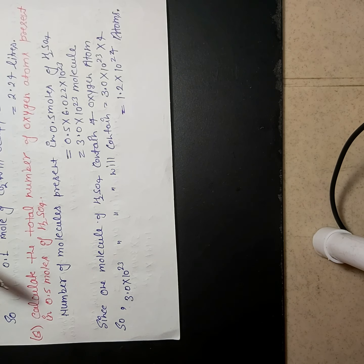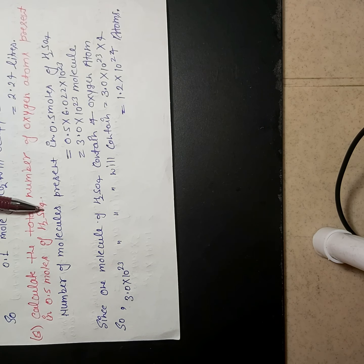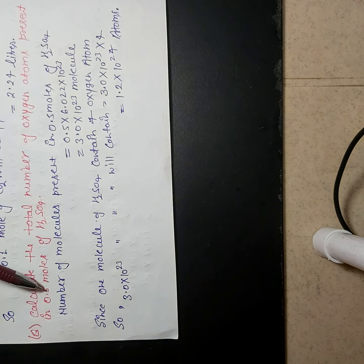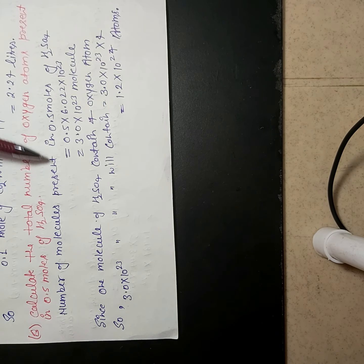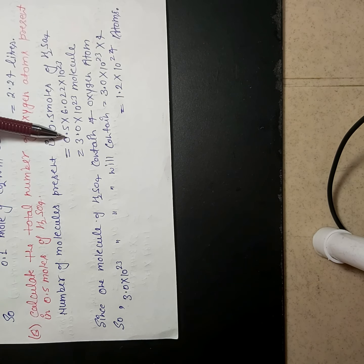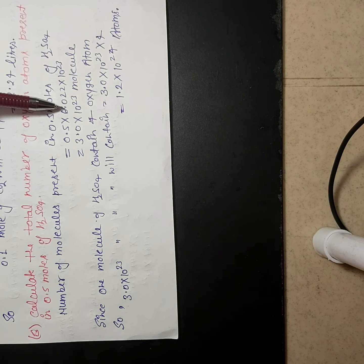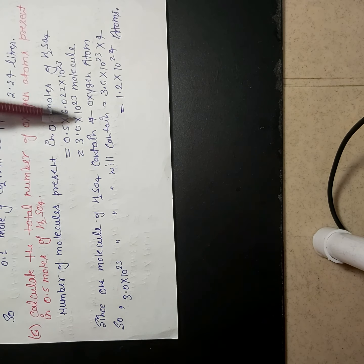As we all know that 1 mole of any compound contains 6.022 × 10²³ molecules. Then half mole of H₂SO₄ will contain half of Avogadro's number. So the number of molecules present in half mole of H₂SO₄ equals half × 6.022 × 10²³, which equals 3 × 10²³.